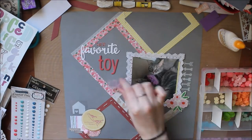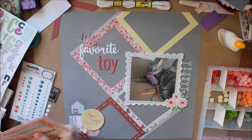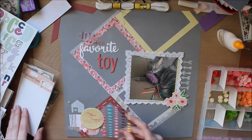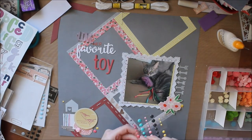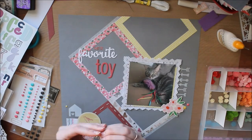So I'm going to add a few enamel dots on the bottom left cluster and the photo cluster to the right. I'm using these pink and yellow ones from Echo Park. I believe it's the Metropolitan Girl Collection in case you want to know which one. And that pretty much finishes up this layout.